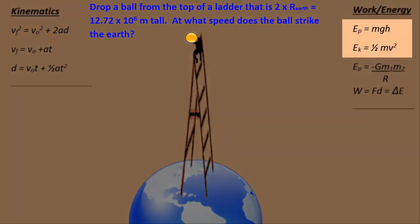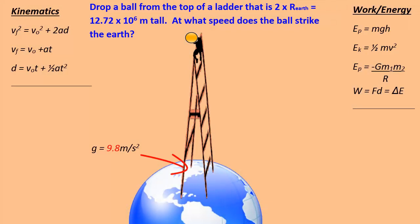If we use our work energy theorem, we might be inclined to say that the potential energy starts at mgh, and ultimately as it falls is converted to kinetic energy. But here lies the problem. g is 9.8 meters per second squared, or the acceleration is 9.8 meters per second squared, only on the surface of the Earth.